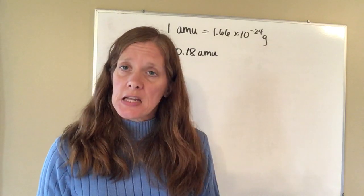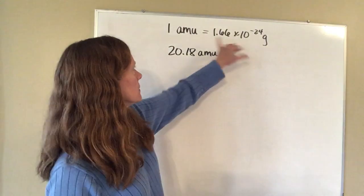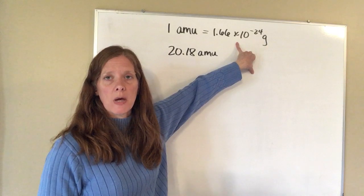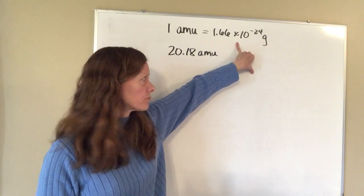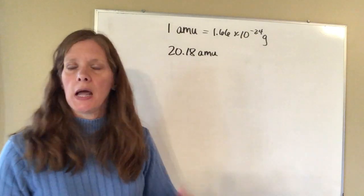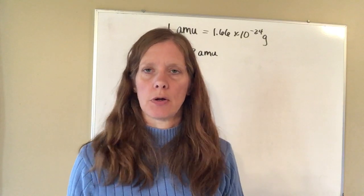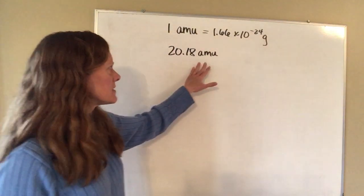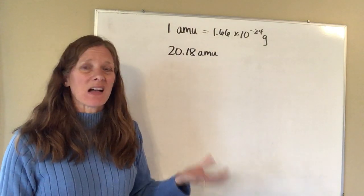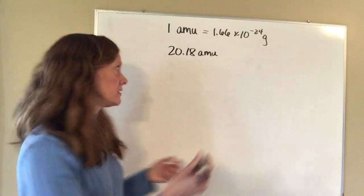AMUs are a very, very tiny unit. A gram isn't very much either, but in comparison, one atomic mass unit is 1.66 times 10 to the minus 24 grams. This is in your textbook — you don't have to have it memorized; it will be given to you on any test. So let's say I want to convert this into grams. This conversion is exactly the same type of conversion we were doing in the first chapter, so hopefully you won't find it very difficult.